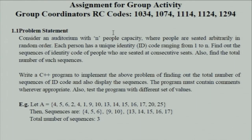If we take our own example, each participant is seated according to their RC codes. But we assume an auditorium with N capacity people, where each participant is seated randomly — not in a particular sequence — and each person has a unique identity code ranging from 1 to N. The problem statement is to find the sequences of identity codes of people seated at consecutive seats and the total number of such sequences.